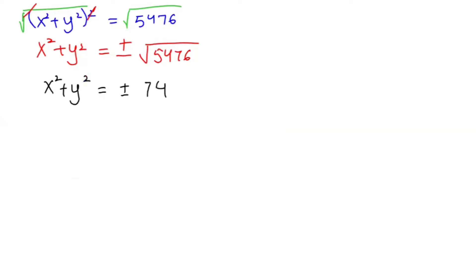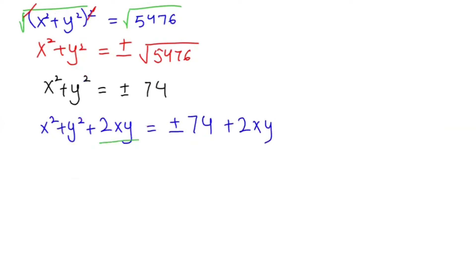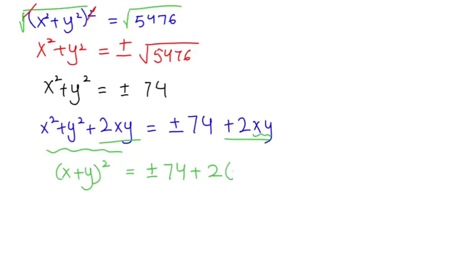Now in the next step I'm going to add 2xy to both sides. So x² plus y² plus 2xy is equal to plus or minus 74 plus 2xy. You can see this is in the form of an algebraic equation. Adding 2xy and plugging in the value of xy, which is 35, gives 2 times 35 equals 70. So (x plus y)² is equal to plus or minus 74 plus 70.